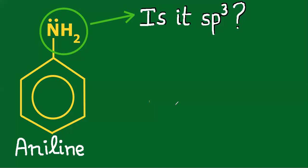Hello students! Aniline is a very important compound in organic chemistry, and the most fundamental point about its structure is the hybridization of nitrogen.